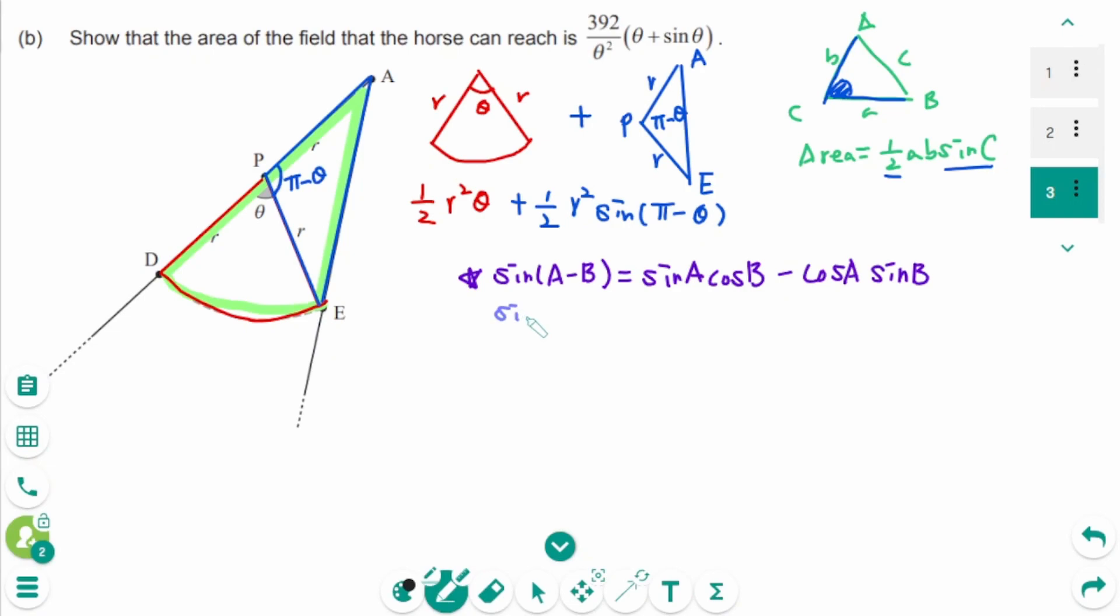So sin pi minus theta equals sin pi cos theta minus cos pi sin theta. Sin pi is 0 times cos theta. Cosine pi is minus 1 times sin theta, which equals sin theta.